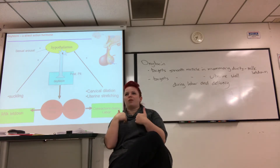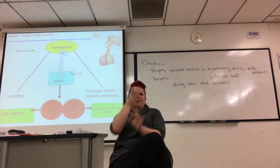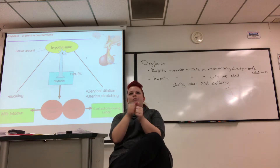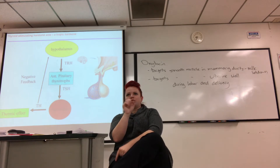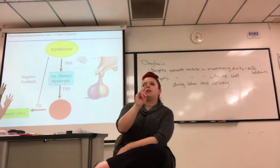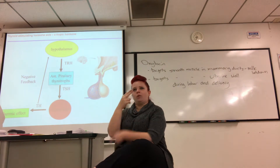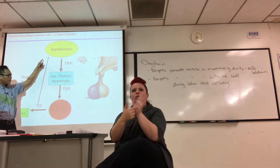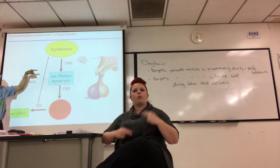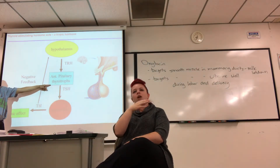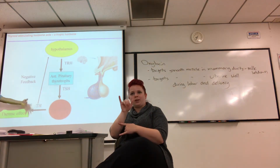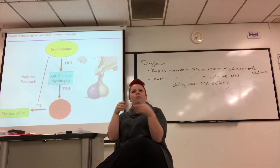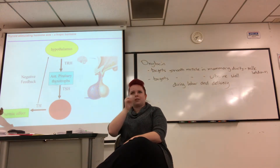So that's what oxytocin does — milk letdown and contractions during labor are the key functions in females. Those are the two posterior pituitary hormones. For the anterior pituitary hormones, we went through that whole table where we gave each trophic hormone from the hypothalamus, how it releases each hormone from the anterior pituitary, and what it targeted. Now I want to talk about what the anterior pituitary hormones ultimately do.